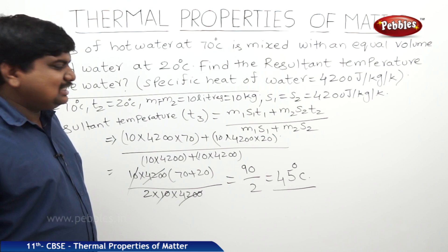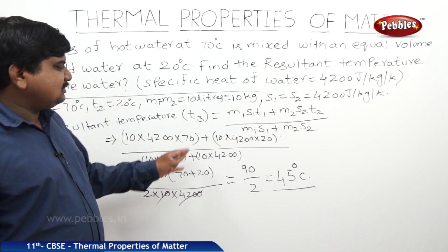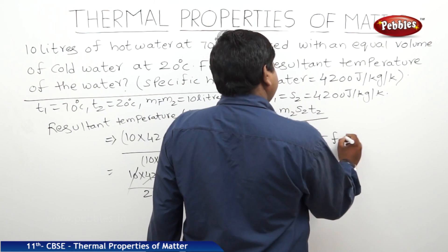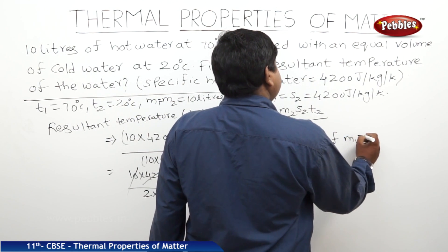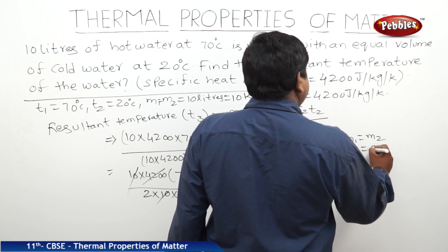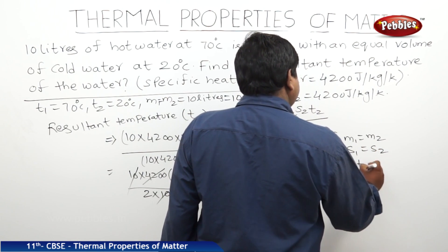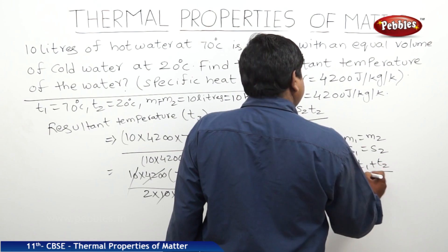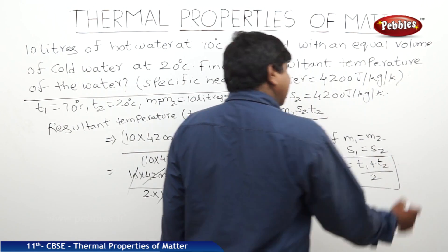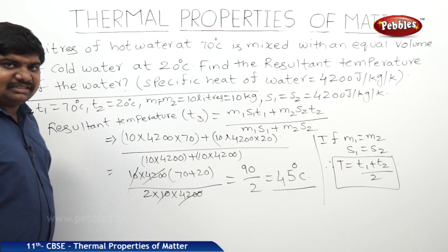When masses and specific heats are the same, the temperature becomes (T1 + T2) / 2. If M1 = M2 and S1 = S2, then the resultant temperature T = (T1 + T2) / 2. This is one of the special cases in the principle of method of mixtures.